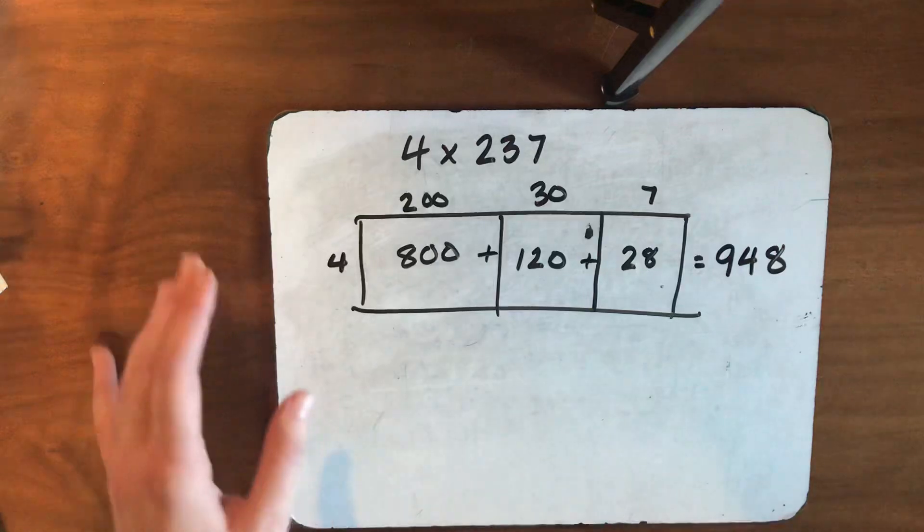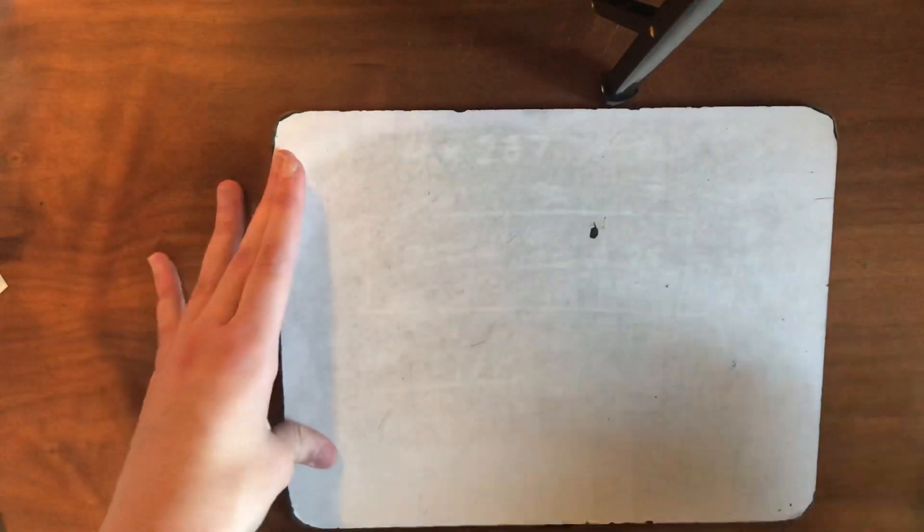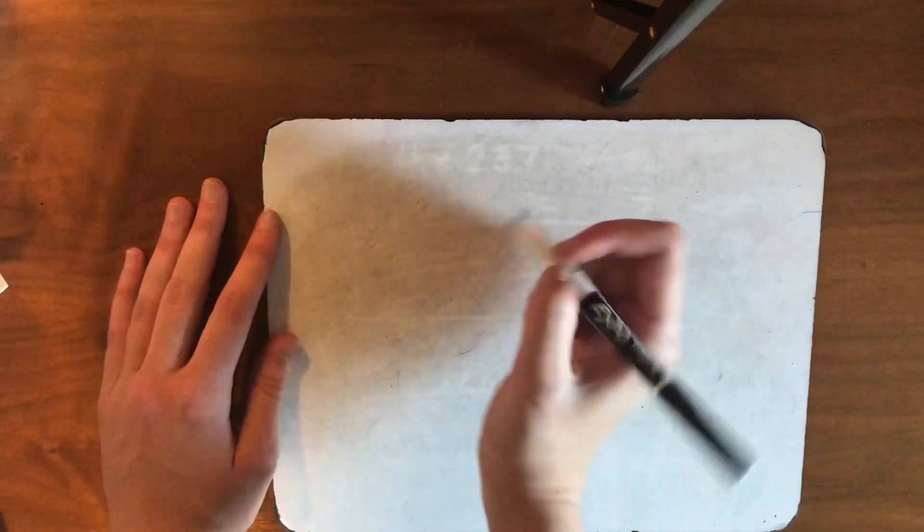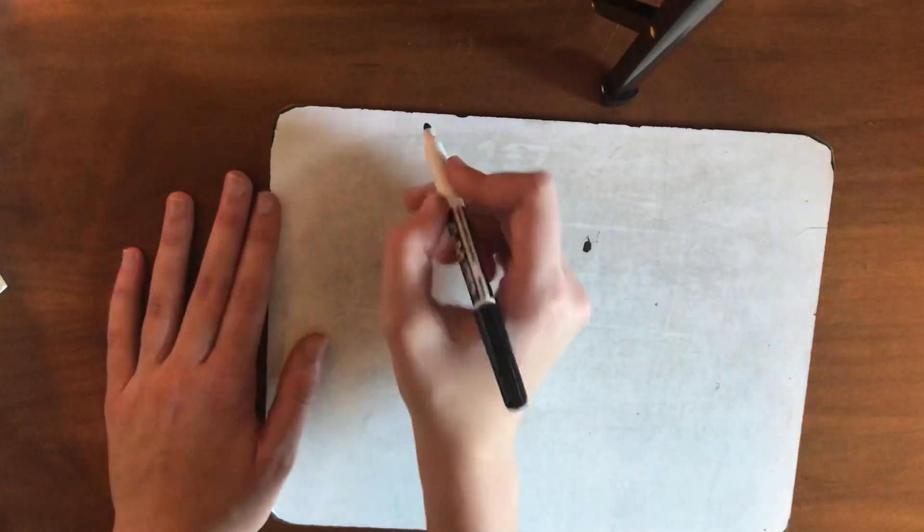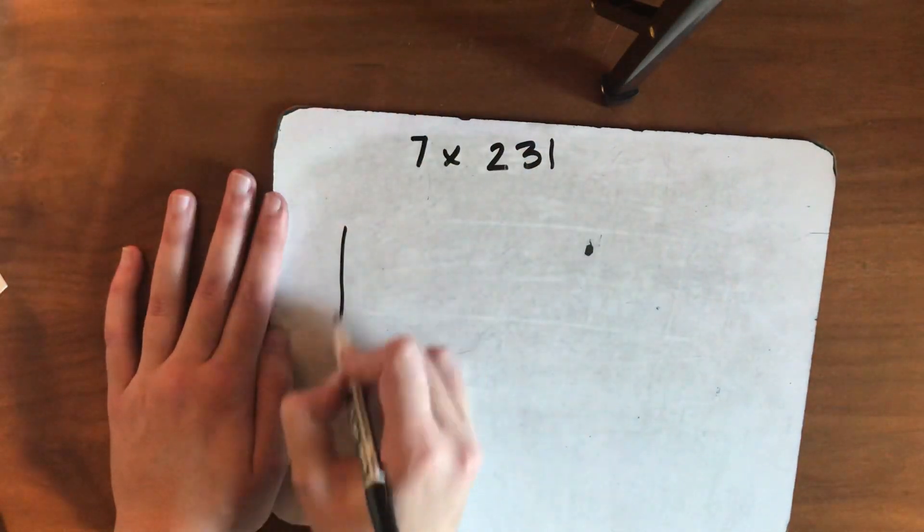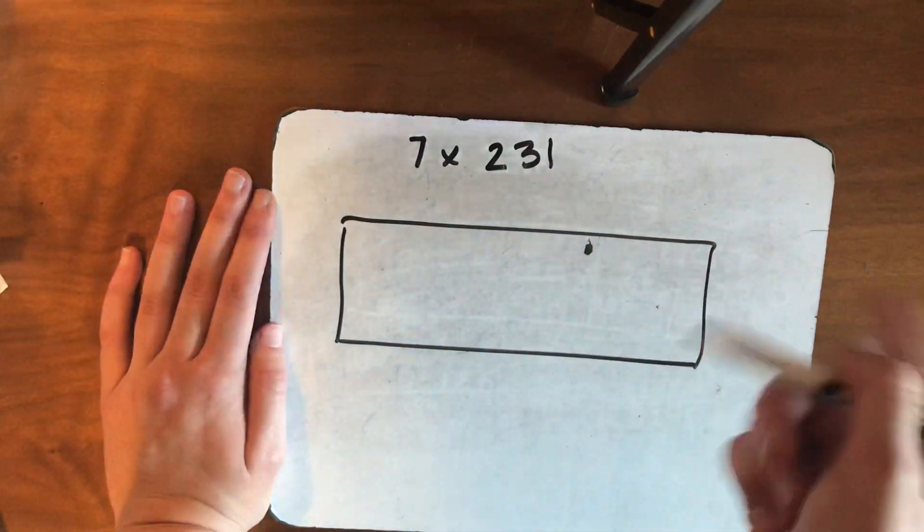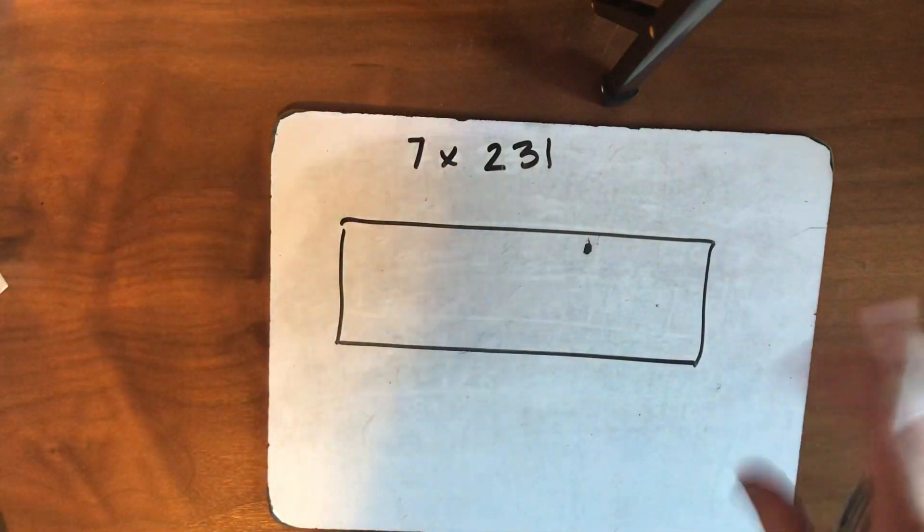Now, time for you to try. Now, I know that you probably know it the shortcut way, but can you show me on your Nearpod board the answer for 7 times 231 with the place value box. Break 231 up. Try it on the Nearpod drawing board.